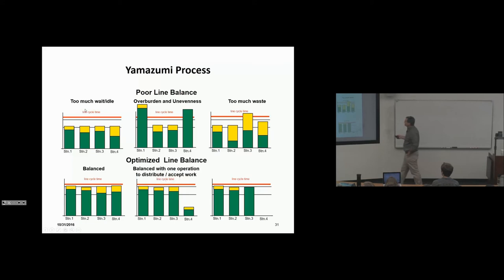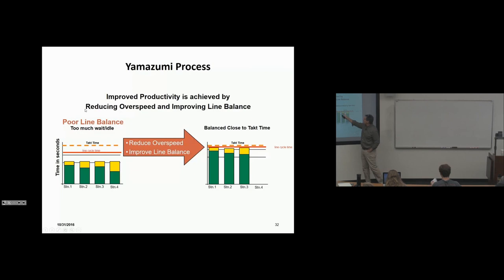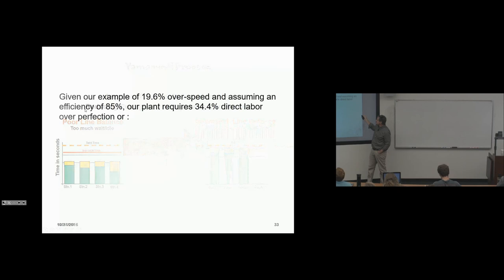So balance with one operation to distribute, balance with one operation distributed. Just a couple examples. So we want to reduce overspeed, right? We want to slow the line down, don't we, ultimately, by reducing OEE.